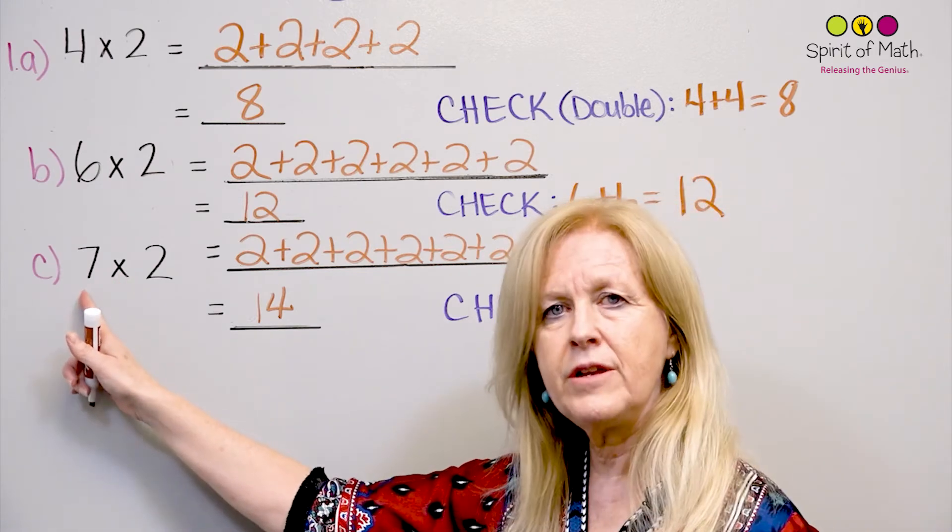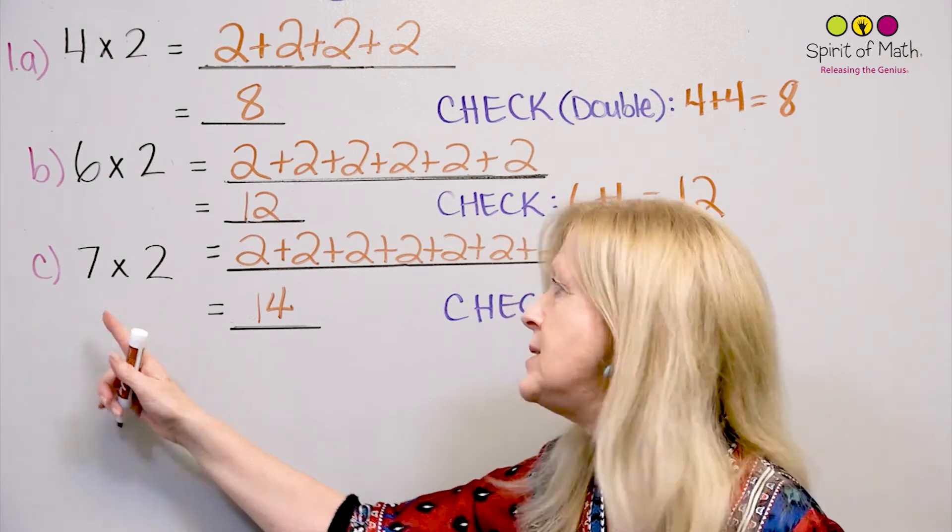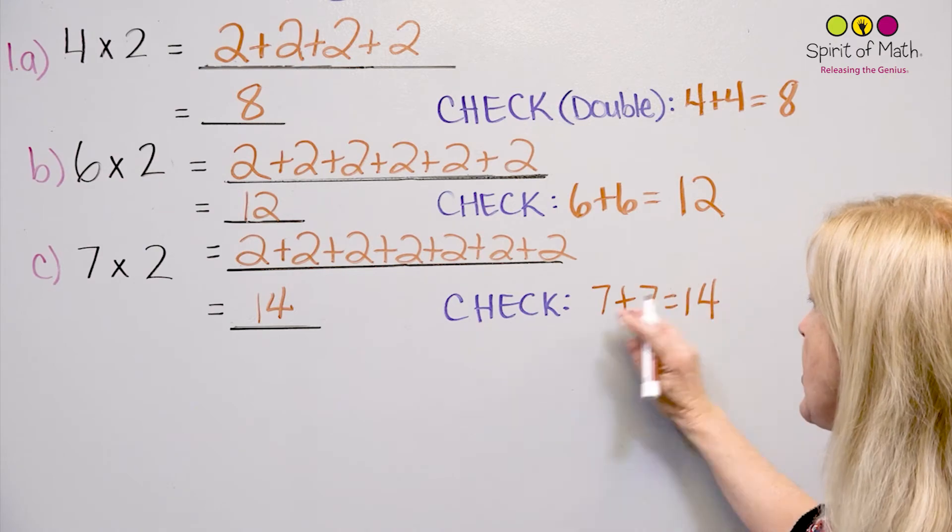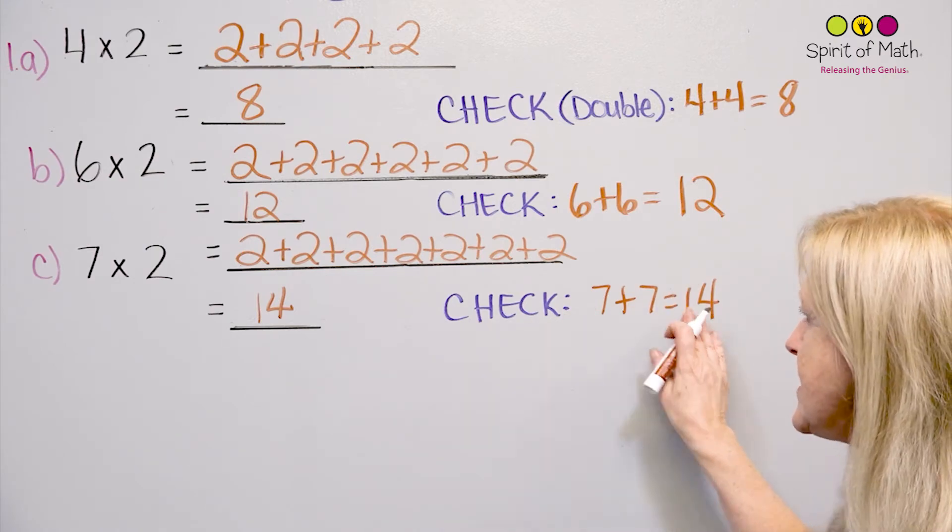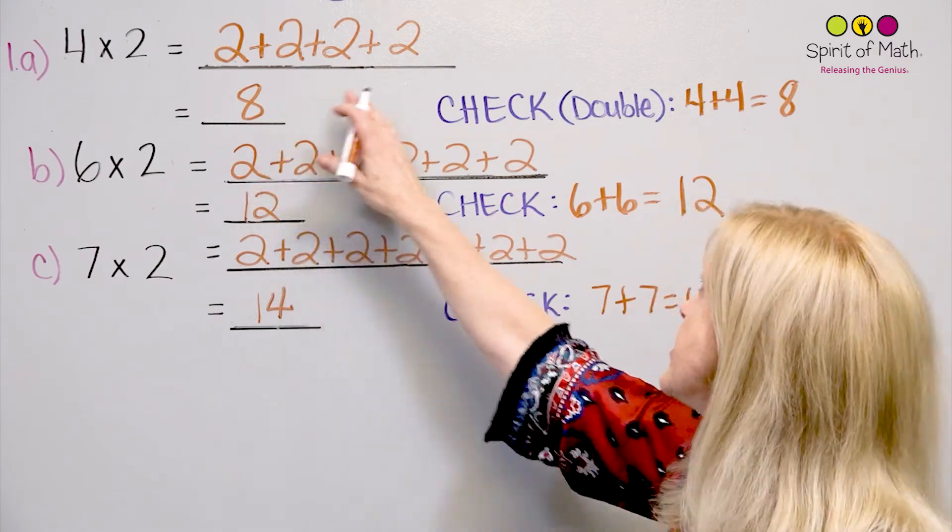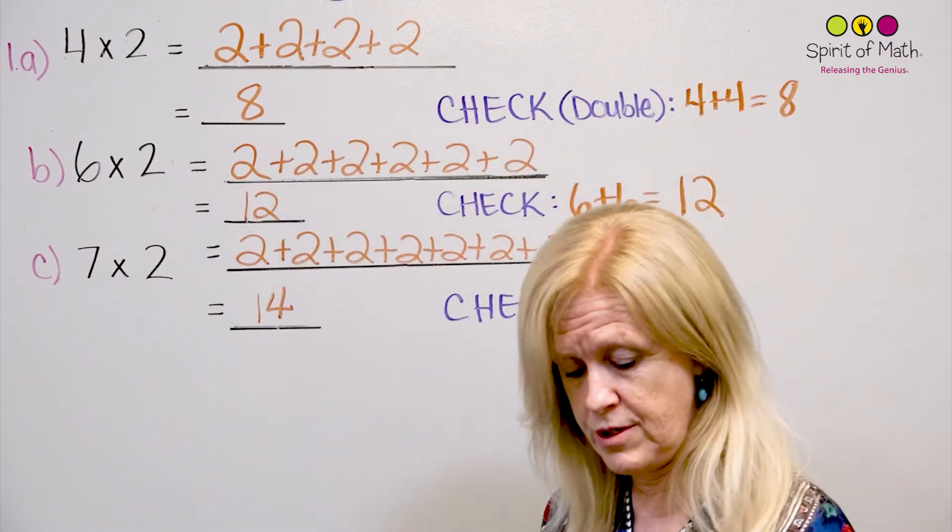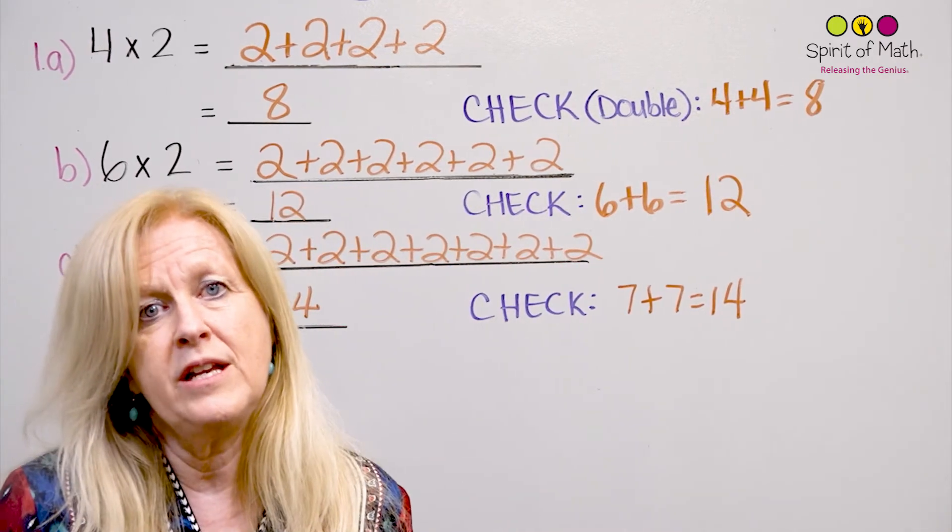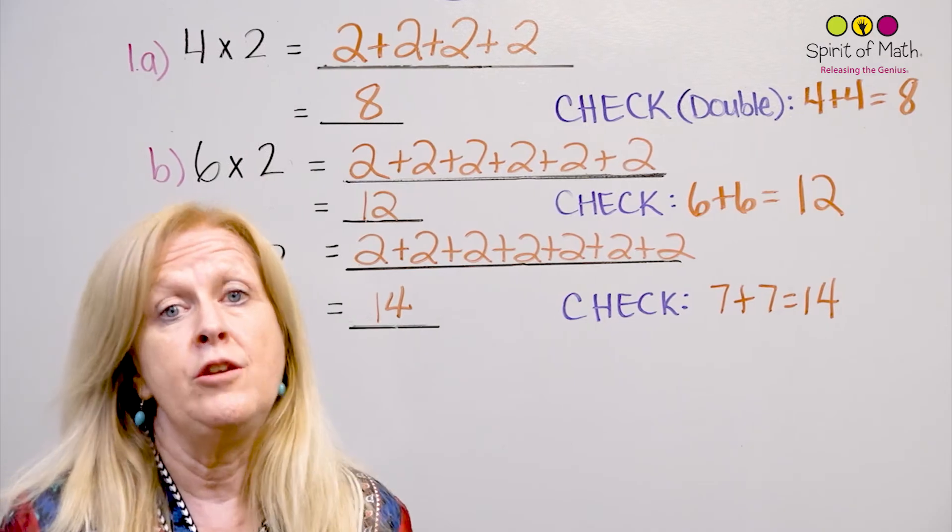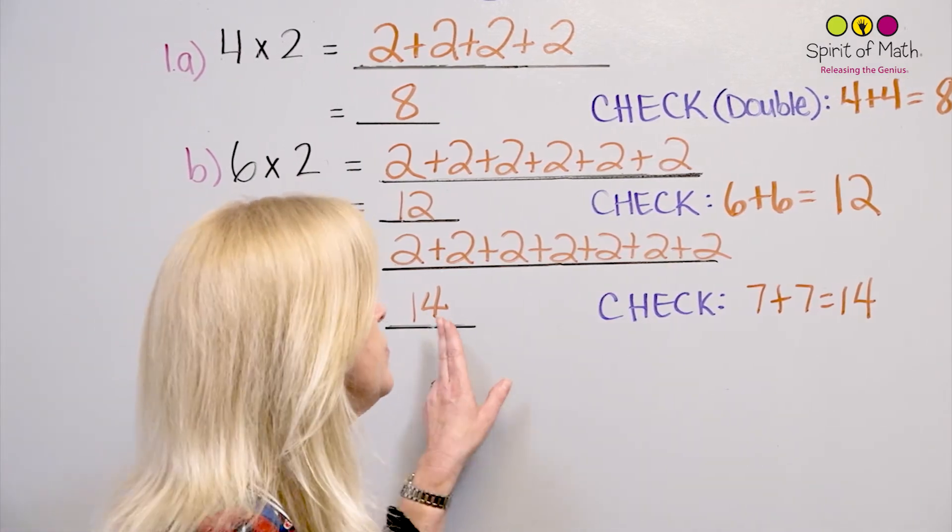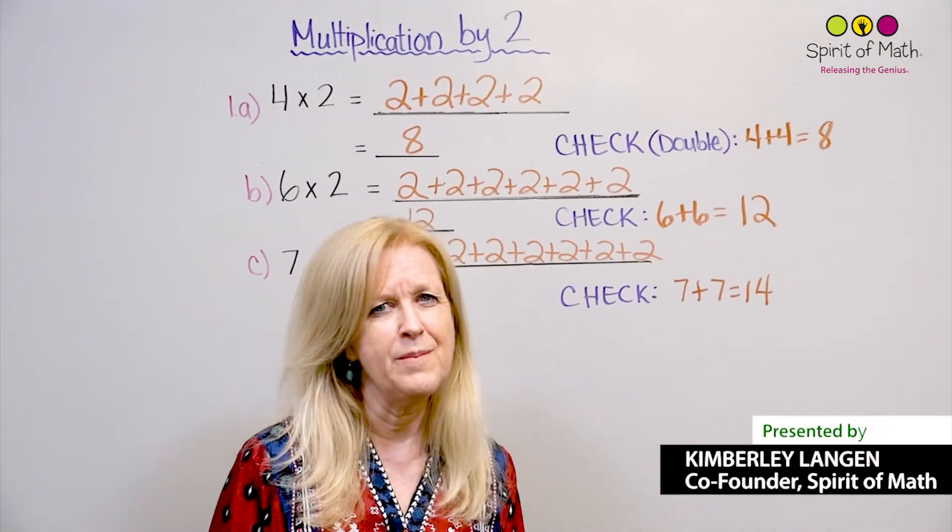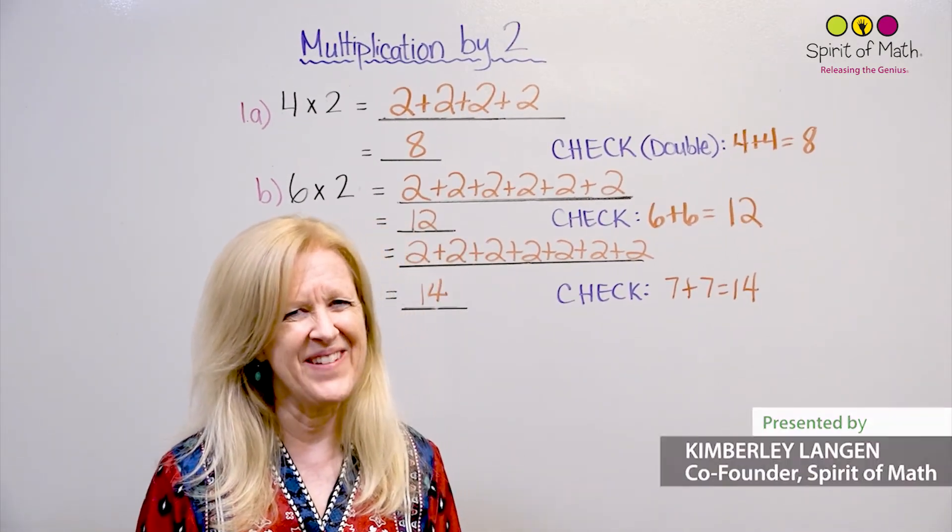So 6 plus 6 is 12. And this is 7 times 2. So double the 7. And you get 7 plus 7, which is equal to 14. Now, we call this a check because it should be the same answer. And so you're checking to make sure that your answer is correct. And you're doing it two different ways. And that's your way to find out if you did something wrong, you know. And you know you did something wrong because the numbers won't be the same.